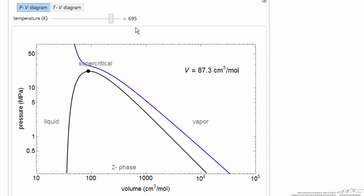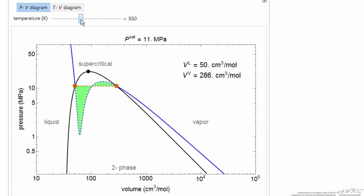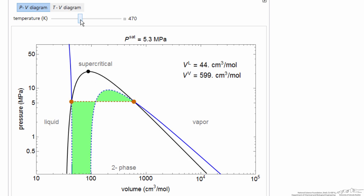And then we're in the vapor region at the lower pressures. So now, all the points on the blue line correspond to physically meaningful values, whereas in the two-phase region we draw this horizontal line that connects.